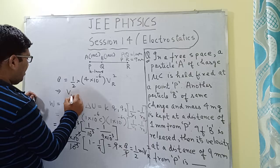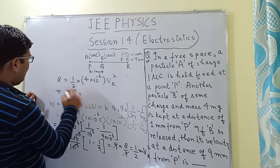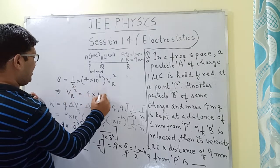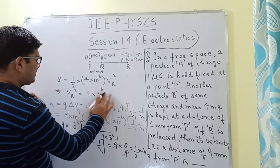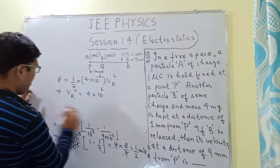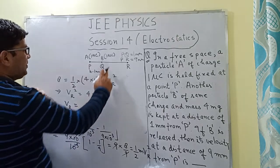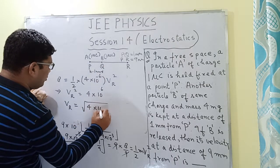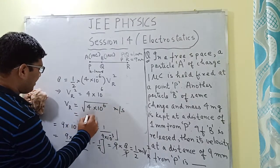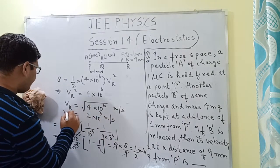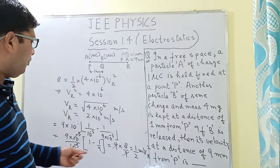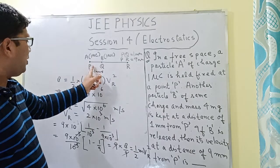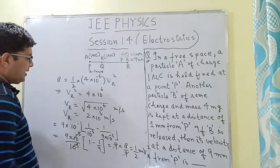So it implies that vR² = (8/9 × 9 × 9×10⁹ × (10⁻⁶)²) / (½ × 4×10⁻⁶), which gives vR² = 4×10⁶. Therefore vR = √(4×10⁶) = 2×10³ m/s. The velocity of particle B when it reaches point R, which is at a distance of 9 mm from point P, is equal to 2×10³ m/s.